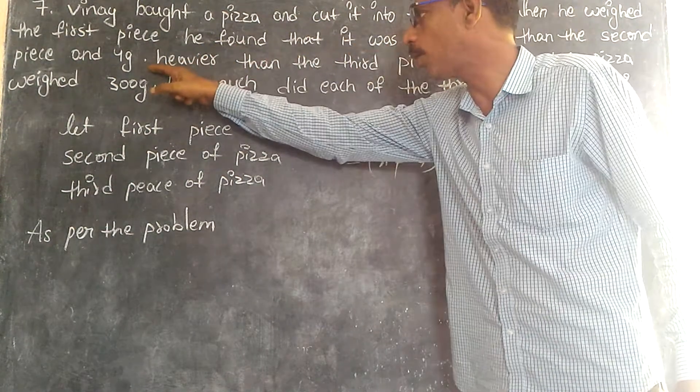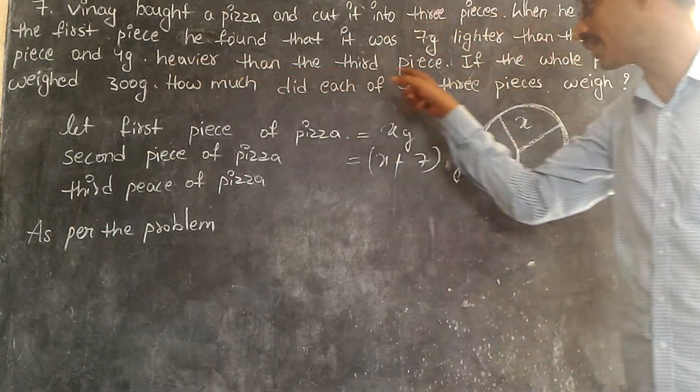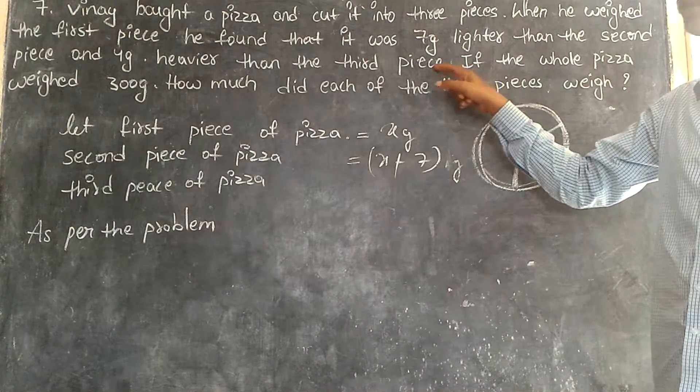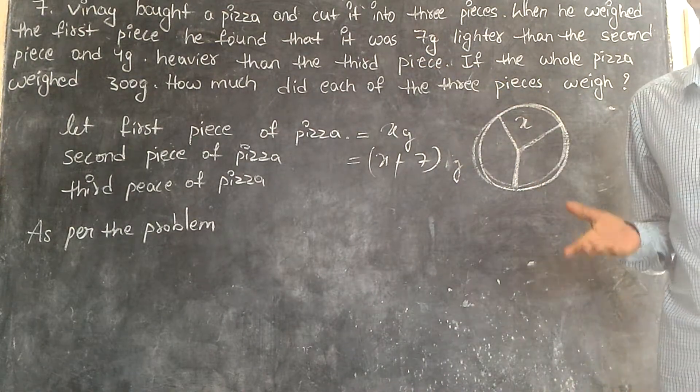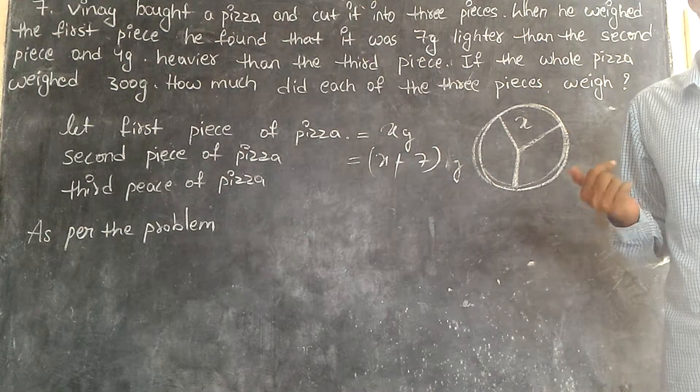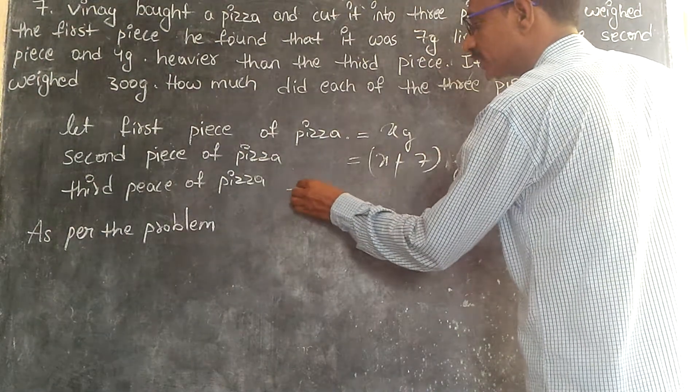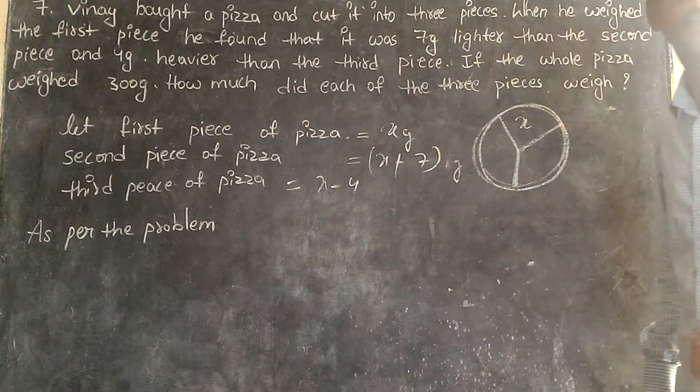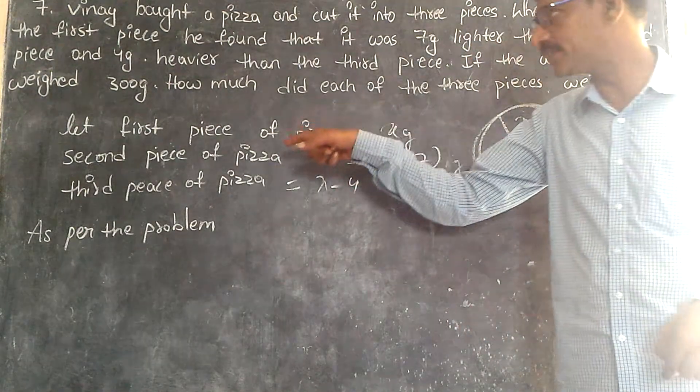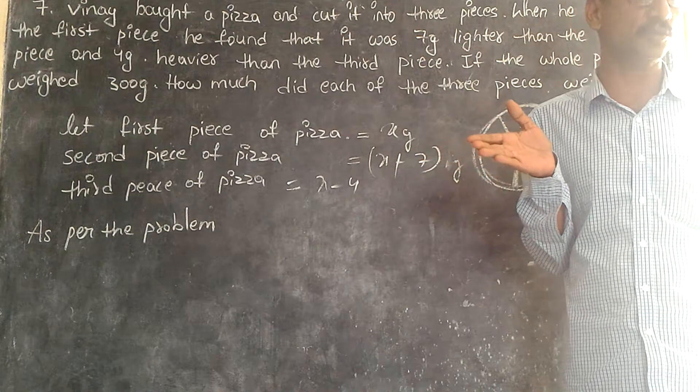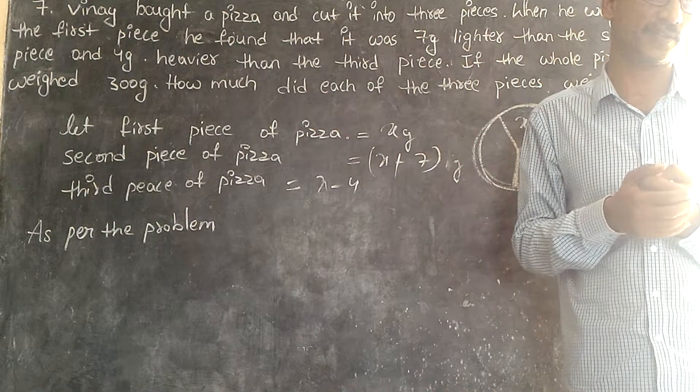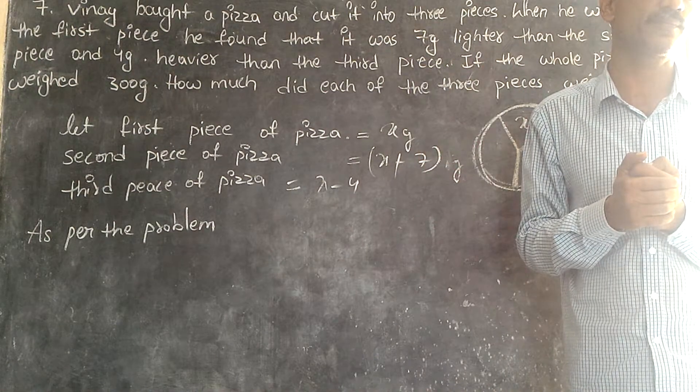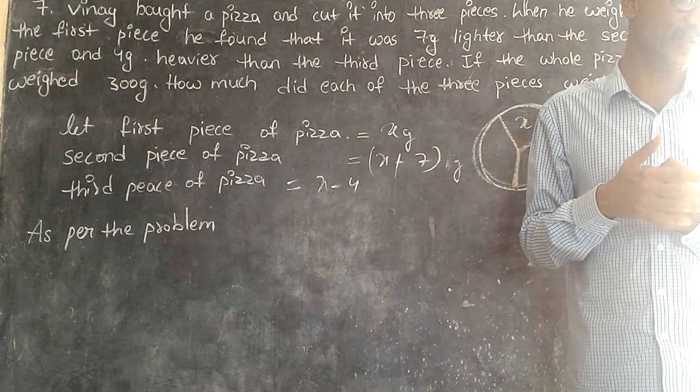And four grams heavier than the third piece. That means, where is the third piece? This is the third piece. Can I subtract four from X? That means this is smaller, four grams smaller than the first piece. That is the meaning of the question.